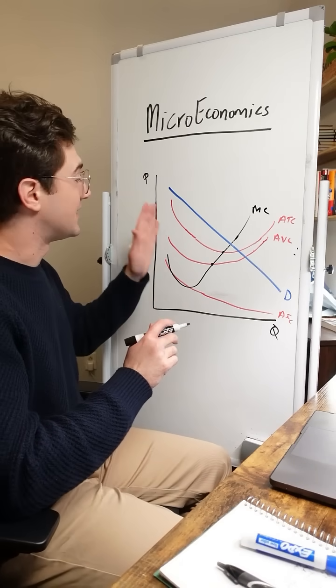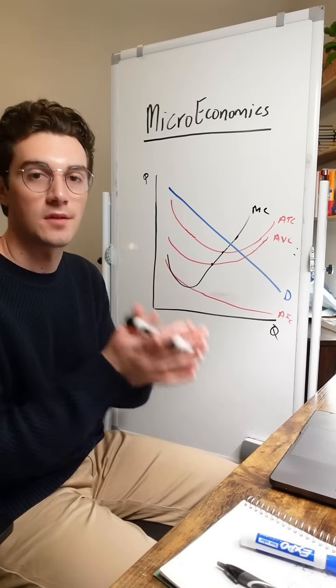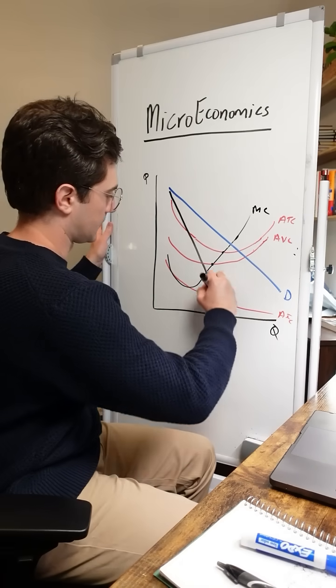And from here, the marginal revenue curve is going to be downward sloping at two times the slope of the demand curve like this right here.